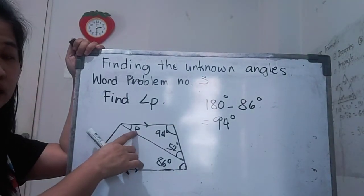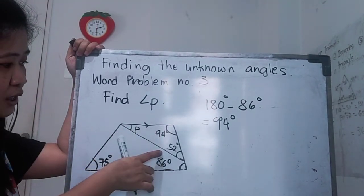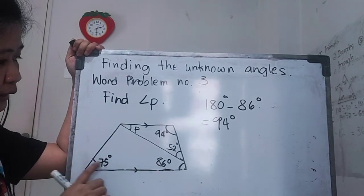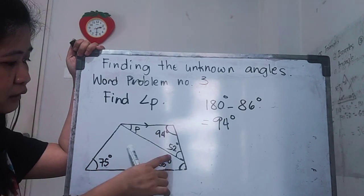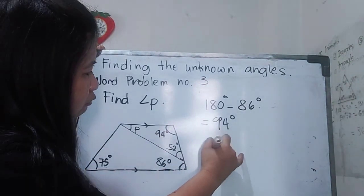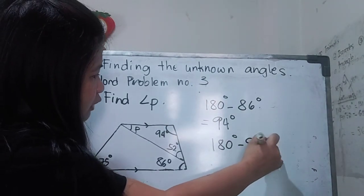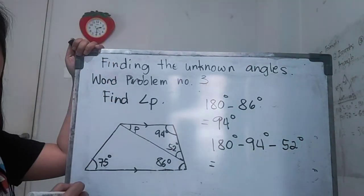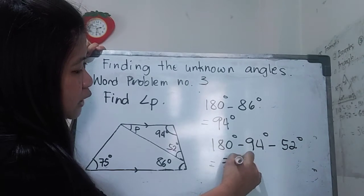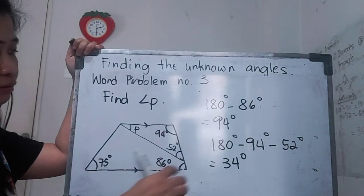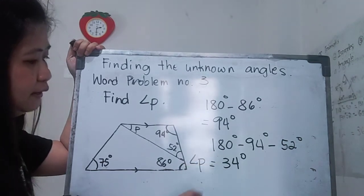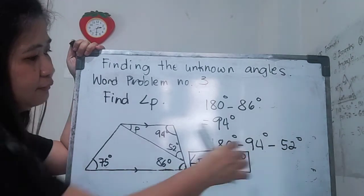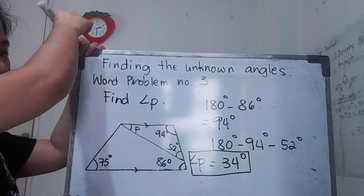Now we can find angle P. Since this is a triangle, and the three angles add up to 180 degrees, we subtract: 180 degrees minus 94 degrees minus 52 degrees. Angle P is equal to 34 degrees. Check: 180 minus 94 minus 52 equals 34.